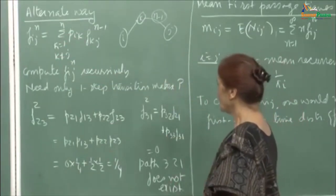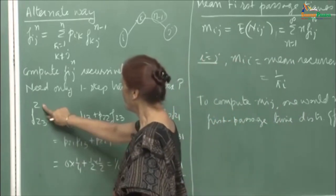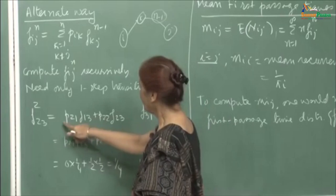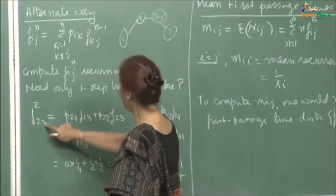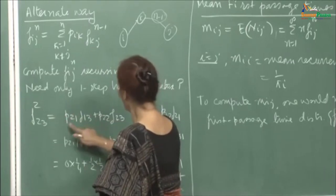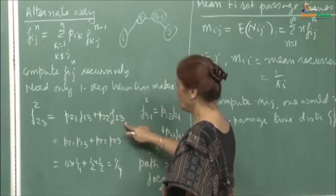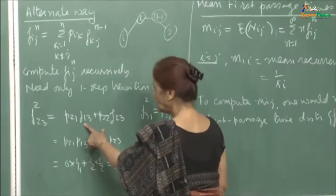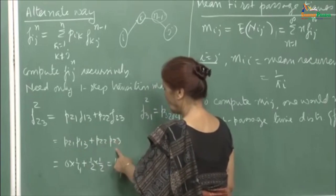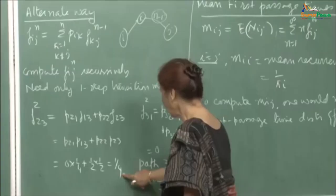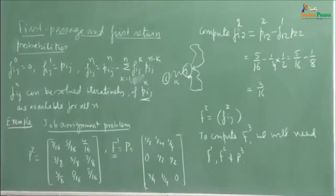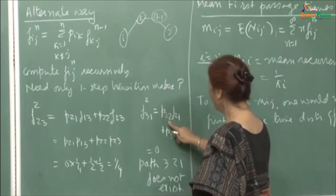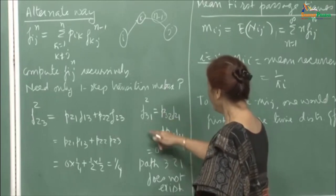Doing the same exercise: to compute f_23(2), since k cannot be 3, k can take the value 1 and 2. So f_23(2) = p_21 times f_13(1) plus p_22 times f_23(1). Since f_13(1) = p_13 and f_23(1) = p_23, this equals p_21 times p_13 plus p_22 times p_23. Now look at f_31(2): here j is 1, so k can be 2 and 3. This gives p_32 times f_21(1) plus p_33 times f_31(1). Since p_21 is 0, this is 0. And p_33 is 0. So you cannot reach from 3 to 1 for the first time in 2 steps.